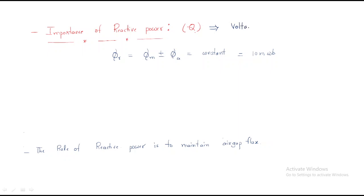Reactive power is completely linked with the excitation. Two things are important here. For example, assume the resultant field is a combination of the main field plus the armature field. This resultant field should be constant — for example, 10 milliweber. We should discuss how it varies for different excitations.